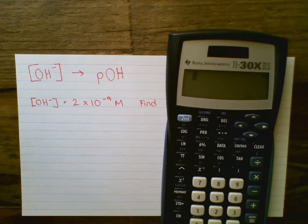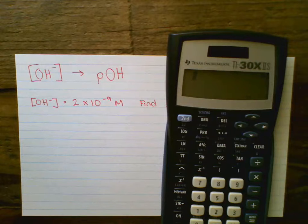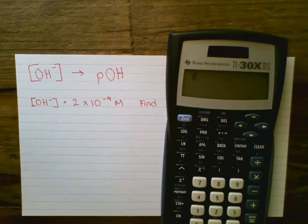So if you watched the first video, we did a calculation where we took our H+ concentration and turned it into our pH. Now we're going to do the exact same calculation but we're going to use the pOH scale instead of the pH scale.